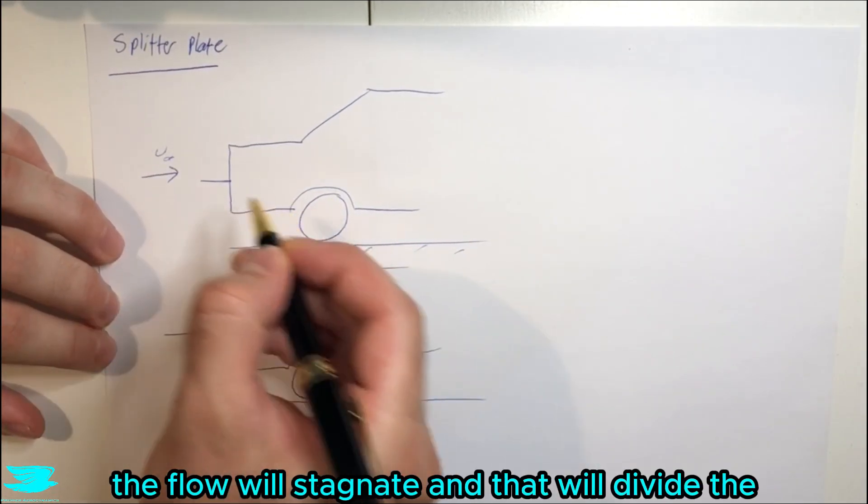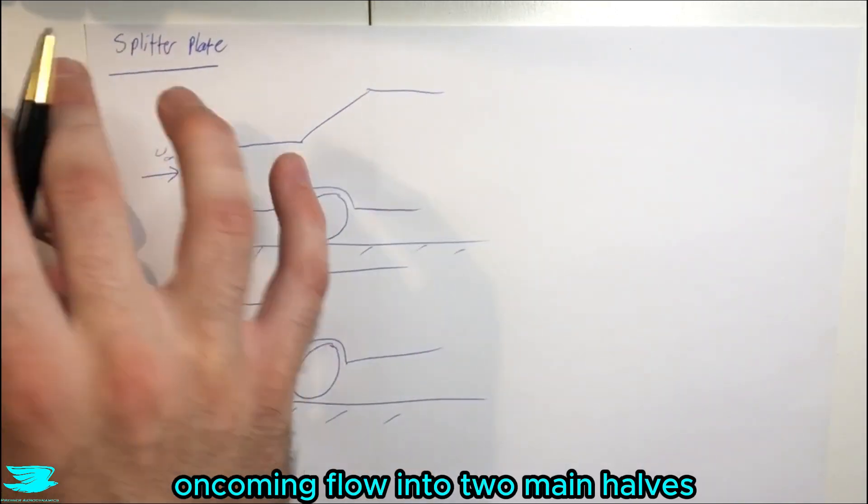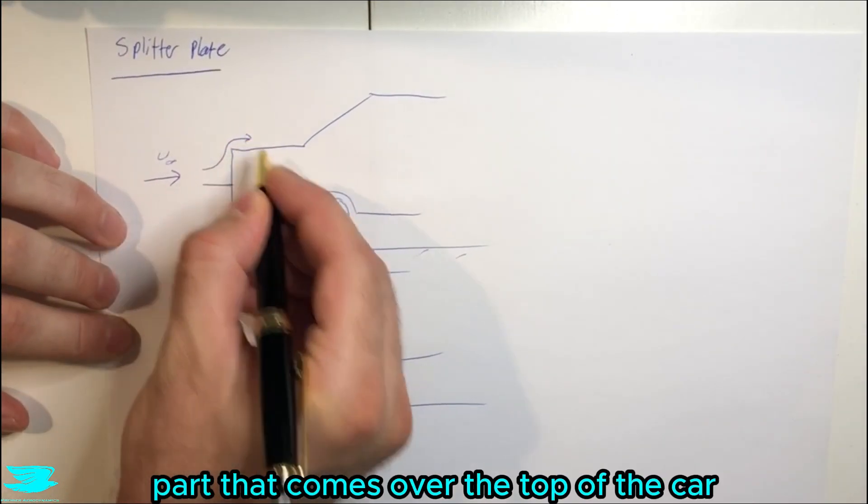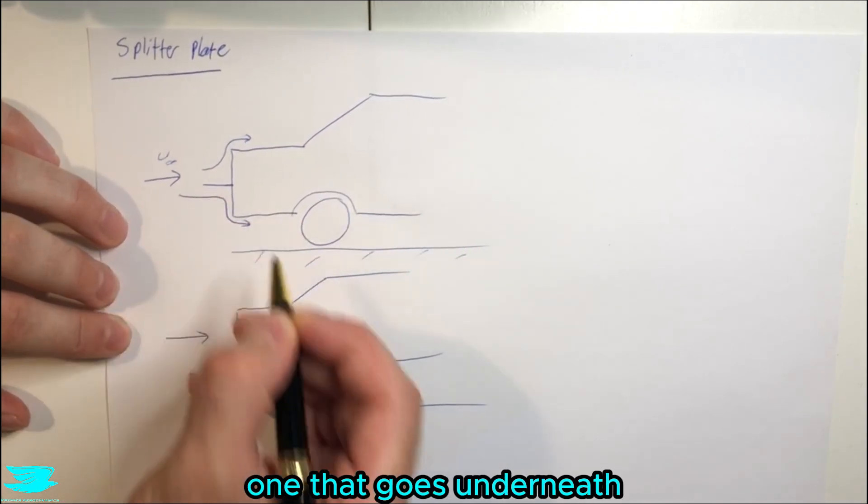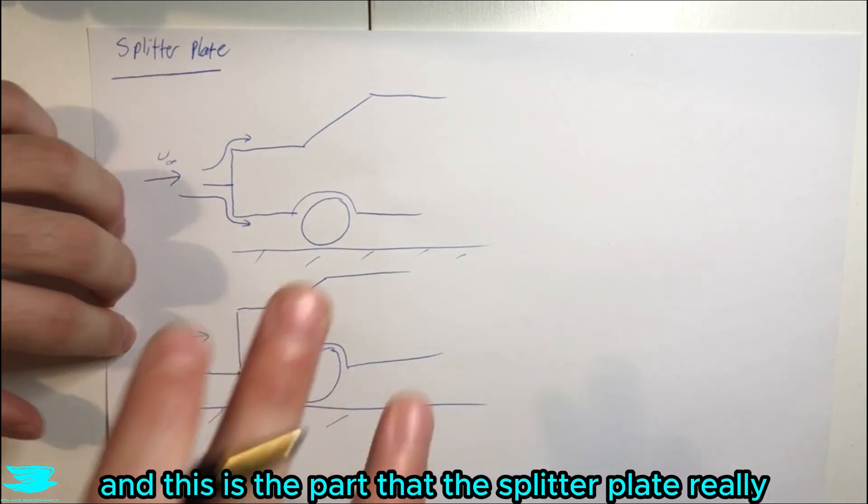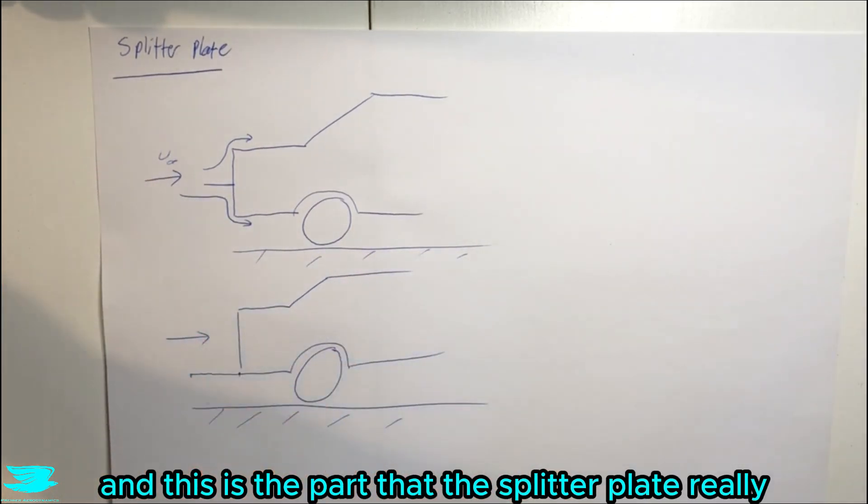The flow will stagnate and that will divide the oncoming flow into two main halves. The first half will be the part that comes over the top of the car. The second part will be the one that goes underneath. Now this underneath part, that's the important bit, and this is the part that the splitter plate really takes advantage of.